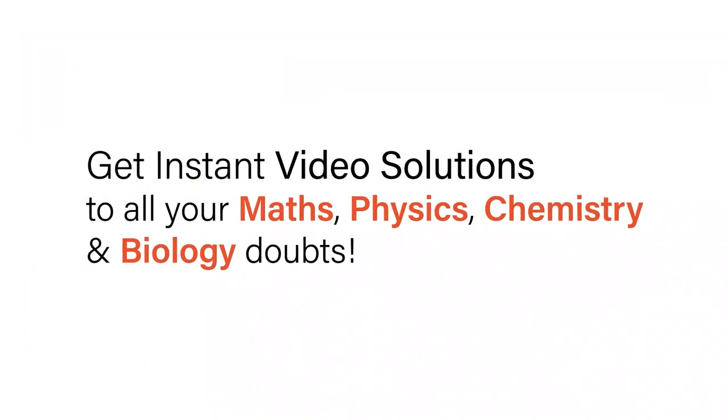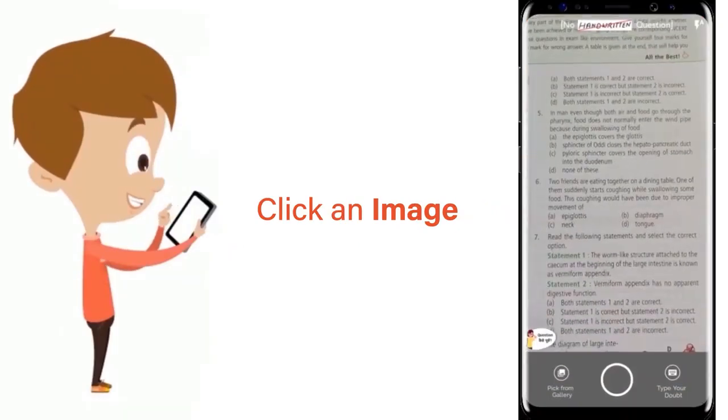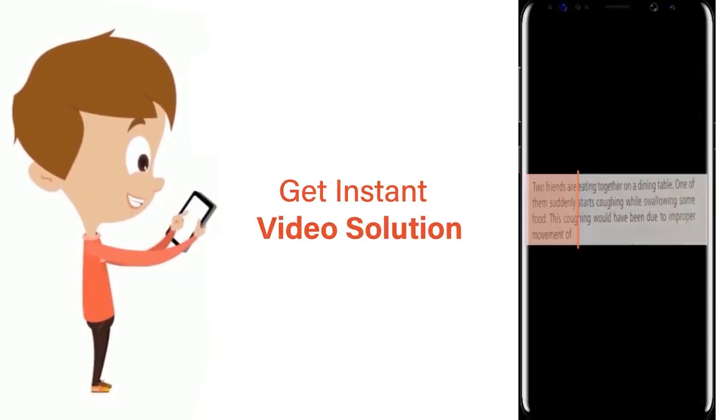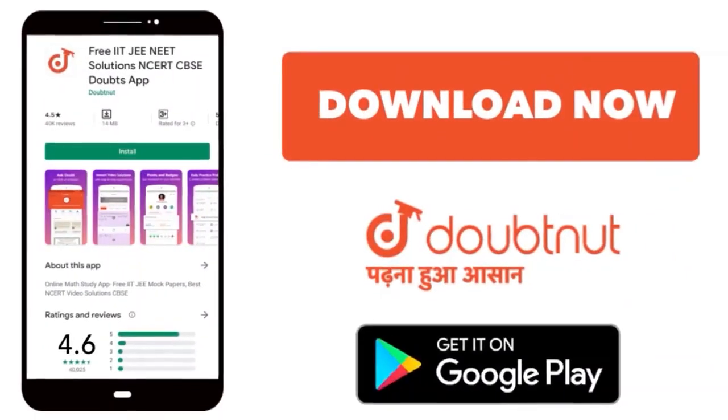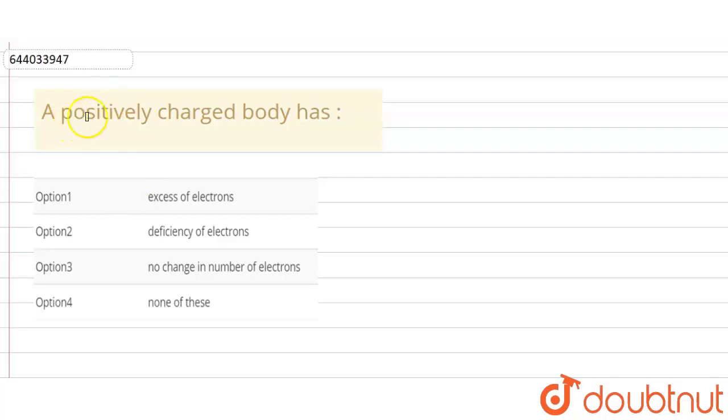With Doubtnet, get instant video solutions to all your maths, physics, chemistry and biology doubts. Just click the image of the question, crop the question and get instant video solution. Download Doubtnet app today. So the question is: a positively charged body has...